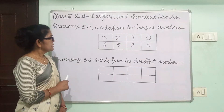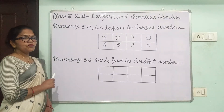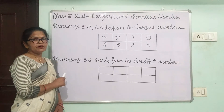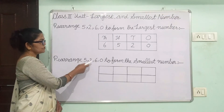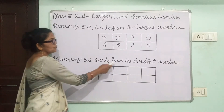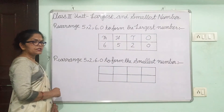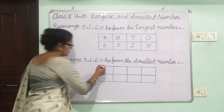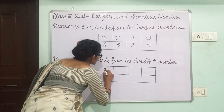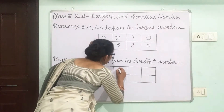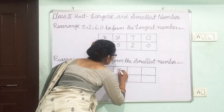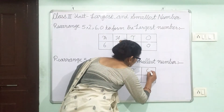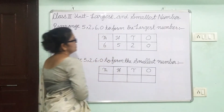Now we will learn how to form the smallest 4-digit number from the given digits. Rearrange 5, 2, 6, 0 to form the smallest number. Firstly, we will draw the place value box: TH for 1000s, H for 100s, T for 10s, O for 1s.